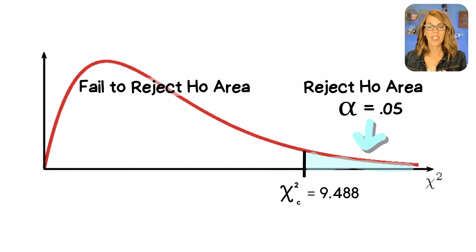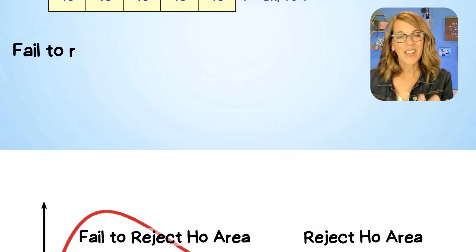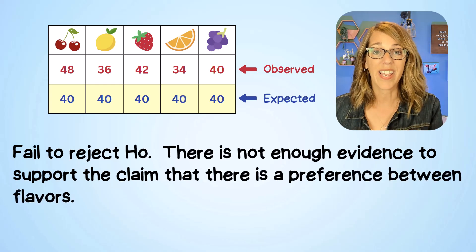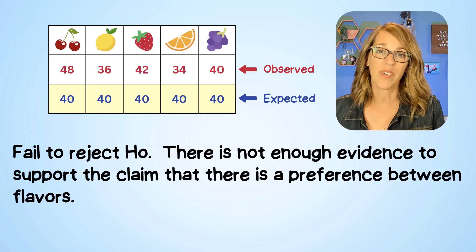Putting this on our graph, we see that chi-square has to be greater than 9.488 to say that we've got a significant preference. Remember, our chi-square was only equal to 3, so we're in that fail to reject region. So we're going to fail to reject that null hypothesis. There is not enough evidence to support the claim that there's a preference between the flavors.